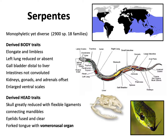Beyond the obvious ones, some less obvious traits: they don't have limbs, they're long. Their left lung is reduced — opposite of amphisbaenids — or entirely absent; they have essentially one lung. The gallbladder, which in mammals is closely aligned with the liver, is actually a separate organ further from the head than the liver. The intestines are not convoluted — just a straight shot down the middle. All their organs are offset, on one side rather than both sides as in us.